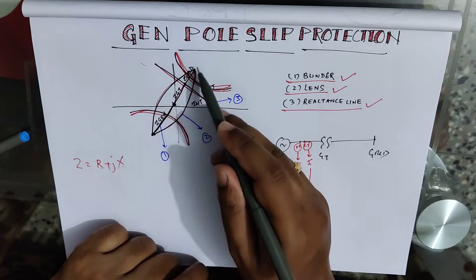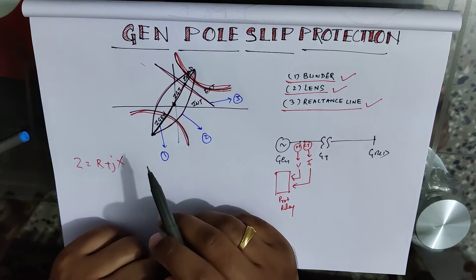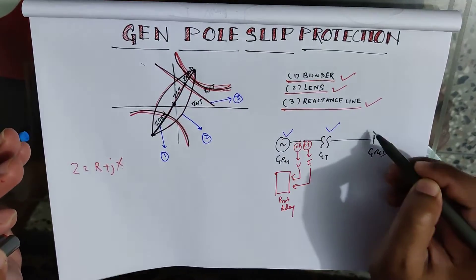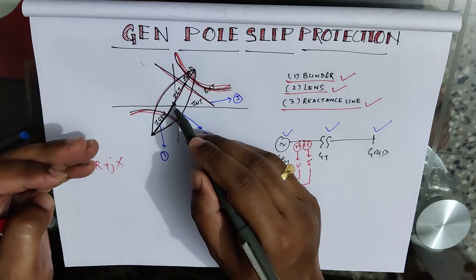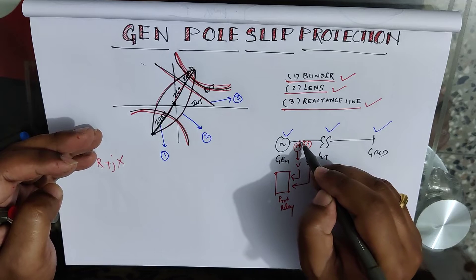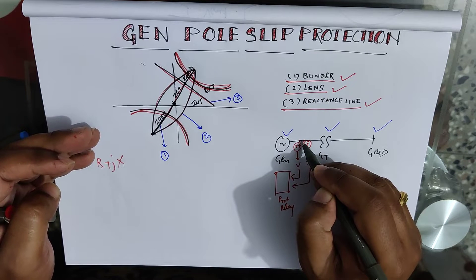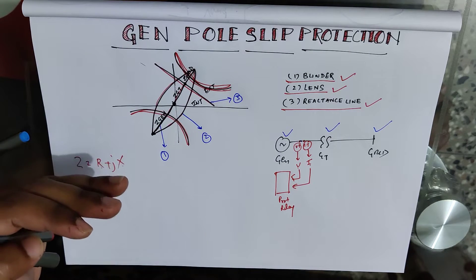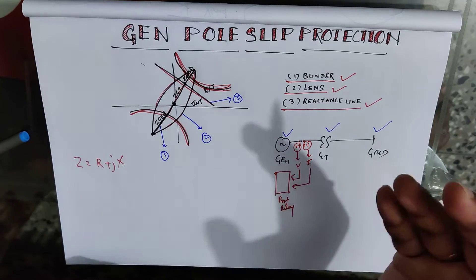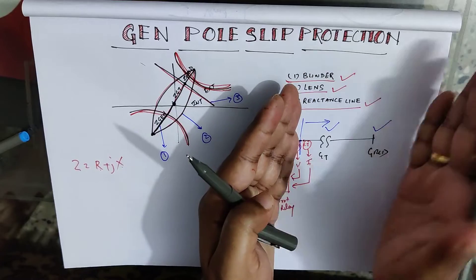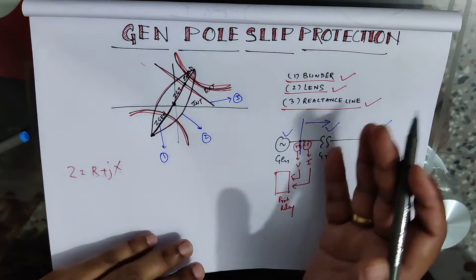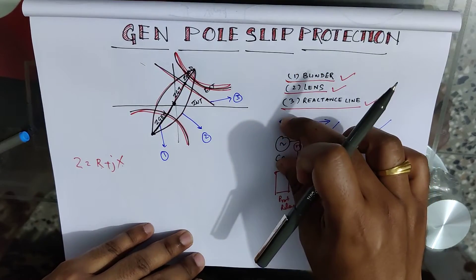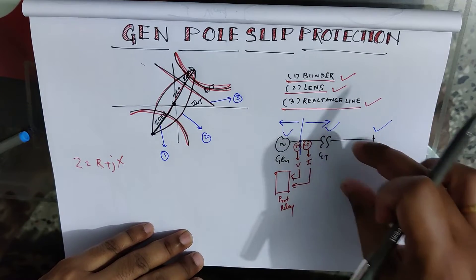The blinder represents the impedance of three parts: generator, GT (generator transformer), and grid. As it crosses through the origin — which is the terminal point of the generator — the relay senses two kinds of impedance: forward impedance (after the sensing point) and backward impedance (before the sensing point). The backward part is the generator part, and the forward part represents GT and grid impedance.